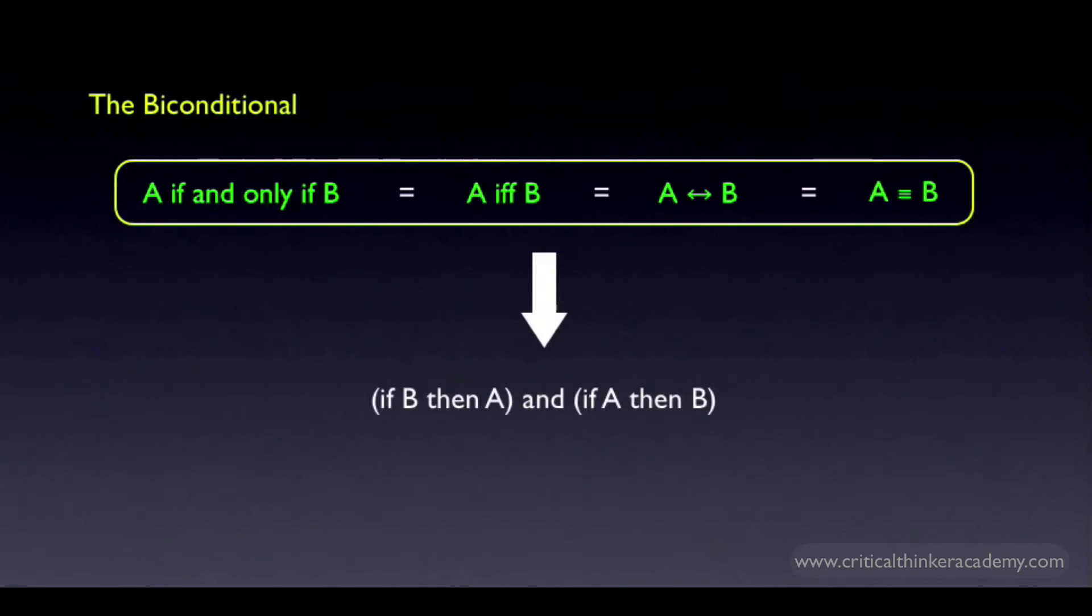Biconditionals show up a lot in formal logic and mathematics. They're used to demonstrate the logical equivalence of two different expressions. From a propositional logic standpoint, the defining feature of a biconditional is that the claims A and B always have the same truth value. If A is true, then B is true, and vice versa.